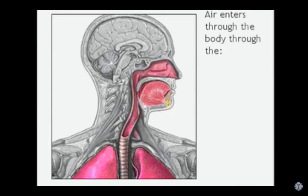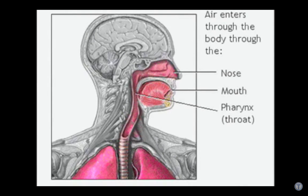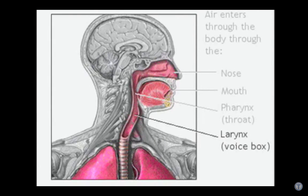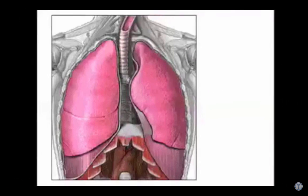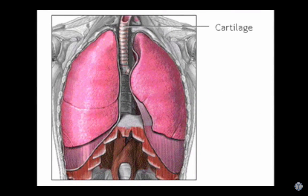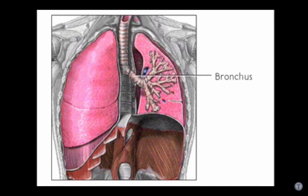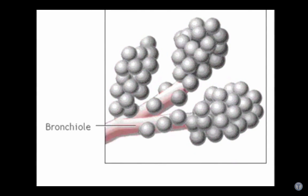Air first enters the body through the mouth or nose and quickly moves to the pharynx or throat. From there, the air passes through the larynx or voice box and enters the trachea. The trachea is a strong tube that contains rings of cartilage that prevent it from collapsing. Within the lungs, the trachea branches into a left and right bronchus, which further divide into smaller and smaller branches called bronchioles. The smallest bronchioles end in tiny air sacs called alveoli, which inflate during inhalation and deflate during exhalation.